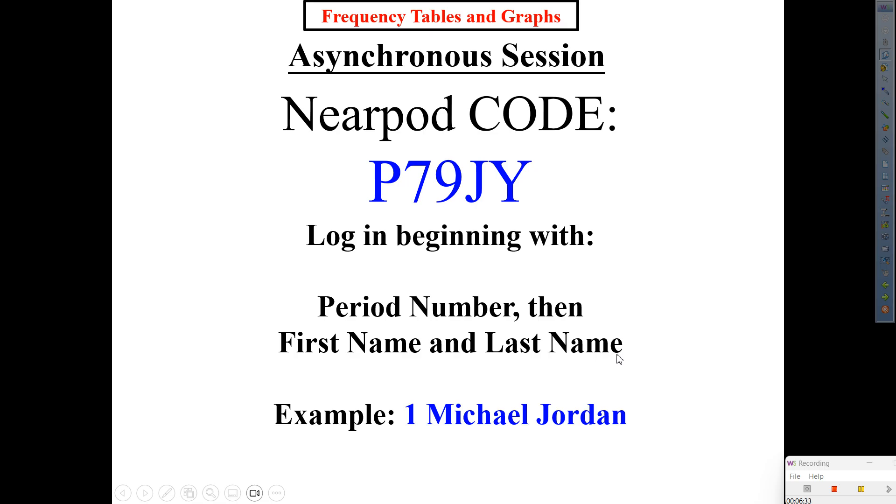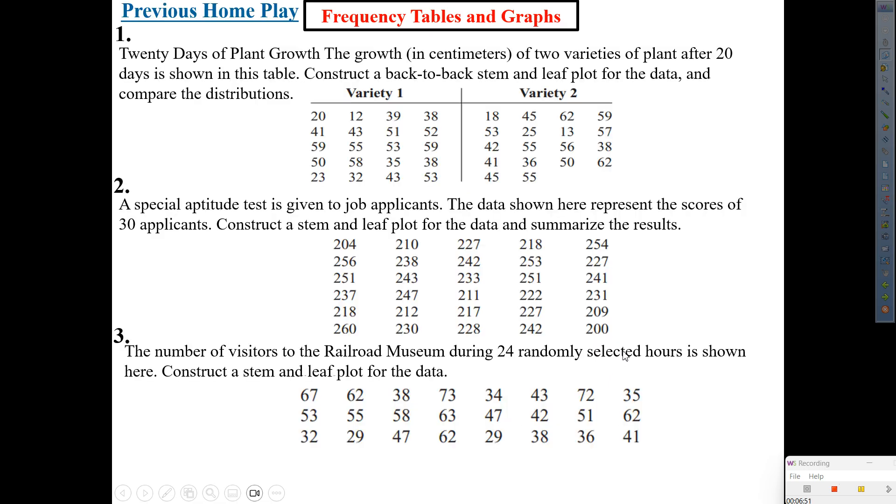All right. So last night, home plate were these three problems. So go ahead and go to Canvas. Turn that in, please. One back-to-back stem and leaf. The other ones were regular stem and leafs. Turn that in, please. Tonight's home plate looked up. Same ones. So you're going to pick one of those to do everything we do today, which is everything from last week and this week together in one. Johnny, let's go.